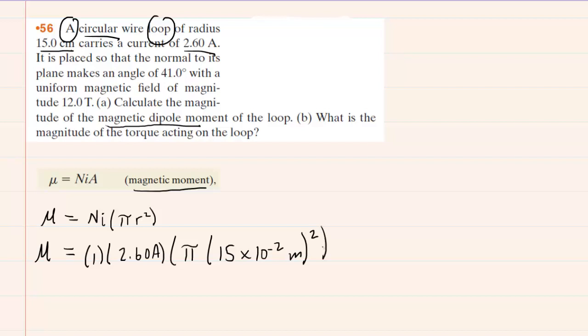We'll just punch this into our calculators. And when we do so, we can see that the magnitude of the magnetic moment is approximately 0.184. If we look at the units, we have amps and then we have meters squared. Remember, we squared the radius, so that ends up as meters squared. Therefore, we have amps times meters squared as the unit of the magnetic moment.